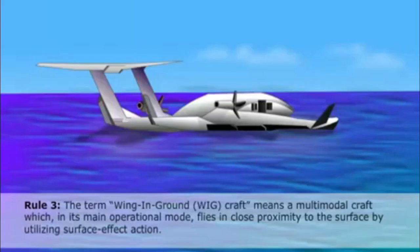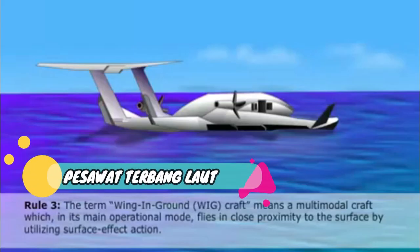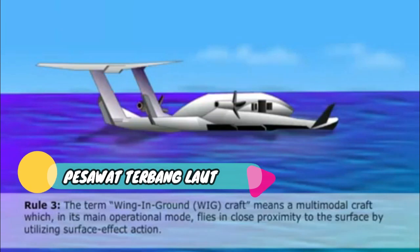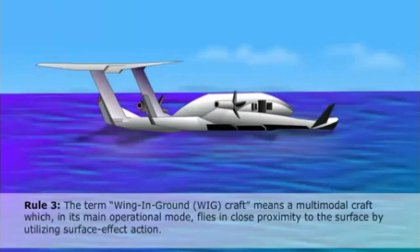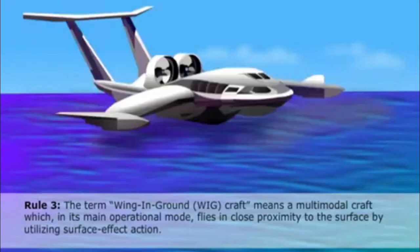Wing-in-ground crafts cruise close to the water with about less than one wingspan's length over the surface. This gives extra lift and decreases the drag.